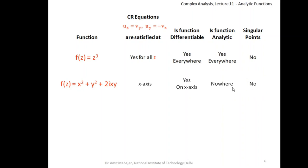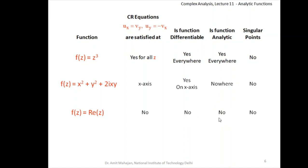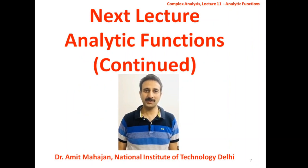One last example: f(z) = Re(z), which means f(z) = x. Here u = x and v = 0, so ∂u/∂x = 1 and ∂v/∂y = 0. The first CR equation ∂u/∂x = ∂v/∂y is not satisfied at any point z. So the function is not differentiable at any point, and therefore not analytic. It is nowhere analytic and cannot have any singular point. If you have any questions you can write in the comment box; do like these video lectures and share them with your friends. Have a good time.